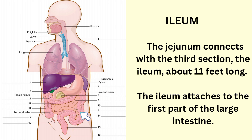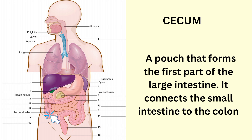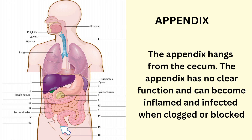The ileum attaches to the first part of the large intestine. Cecum. A pouch that forms the first part of the large intestine, it connects the small intestine to the colon. Appendix. The appendix hangs from the cecum. The appendix has no clear function and can become inflamed and infected when clogged or blocked.